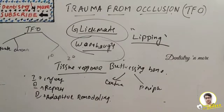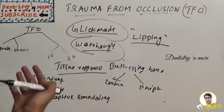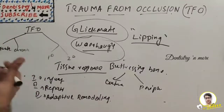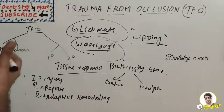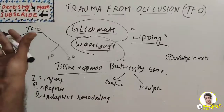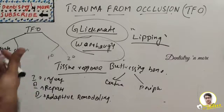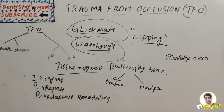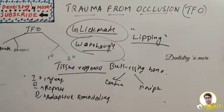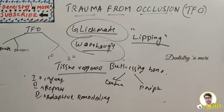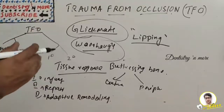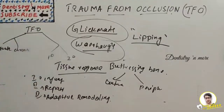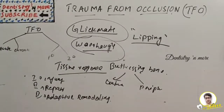Stage 3 is adaptive remodeling. If the repair process cannot keep pace with destruction, the periodontium remodels to create a structural relationship where forces are no longer injurious. This results in a thickened periodontal ligament that is funnel-shaped at the crest, angular defects in the bone with no pocket formation, increased mobility, and increased vascularization.